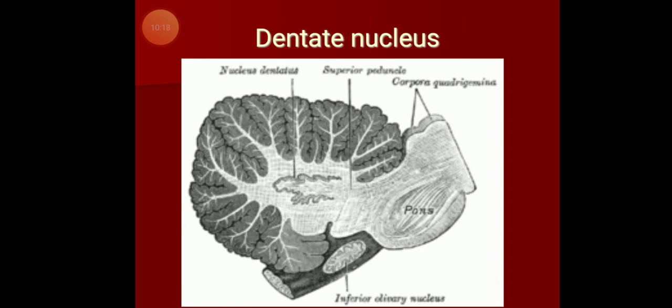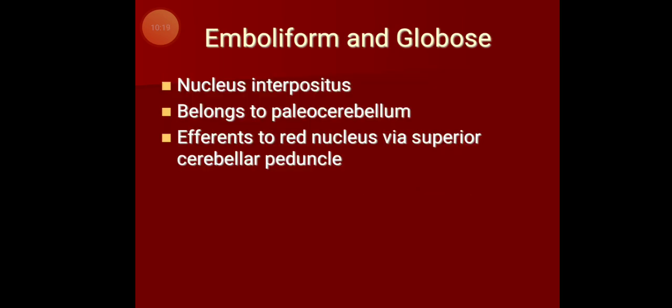The emboliform and globose nuclei together form the nucleus interpositus, belonging to the paleocerebellum. Their efferents also pass via the superior cerebellar peduncle to the red nucleus. So: the nucleus of the neocerebellum is the dentate, and the nucleus of the paleocerebellum is the emboliform and globose nuclei.